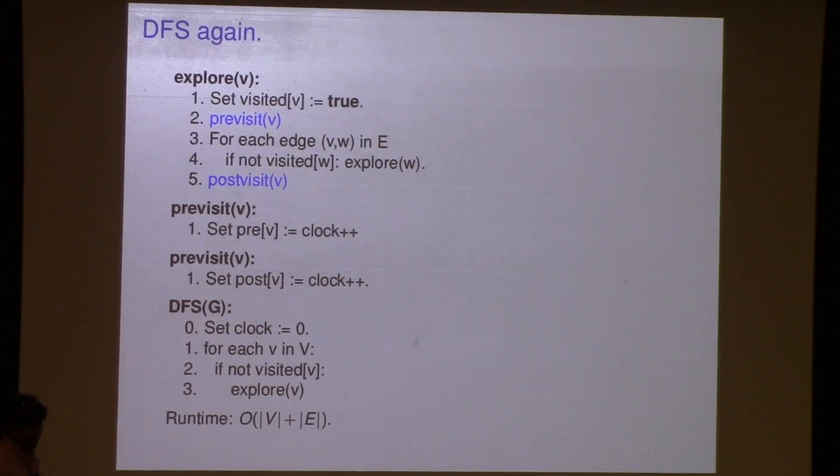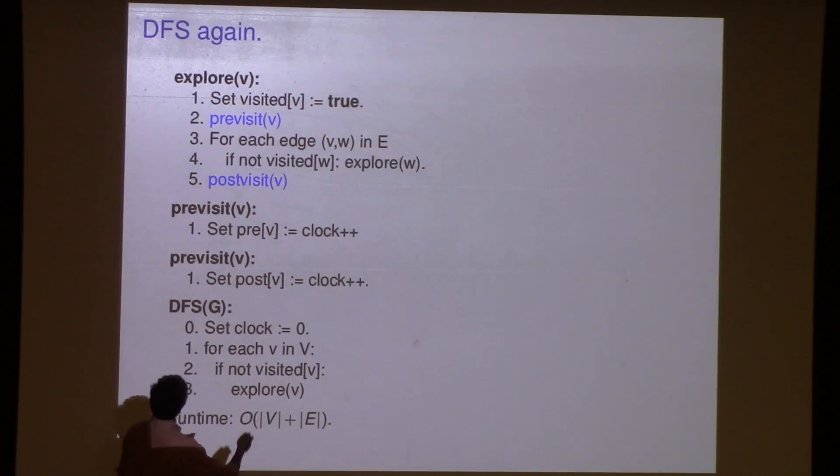The runtime is V plus E, and he argued last lecture that this is a recursive algorithm, but do not try to analyze it using master's theorem or anything like that. You analyze this algorithm by just watching it, and saying what does it do? And what you in particular do is you watch every time it goes through this loop. And what he said in class is he said that every edge is looked at twice, and you could charge all the other work to that action.